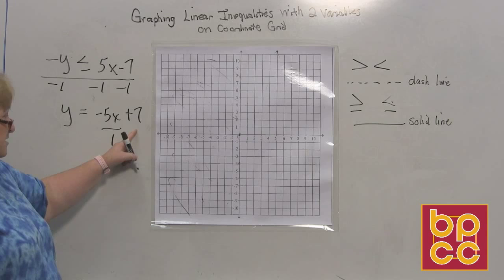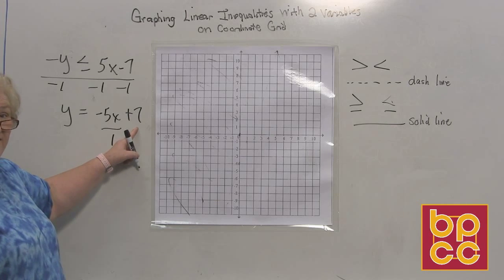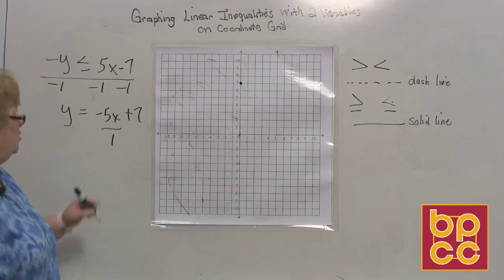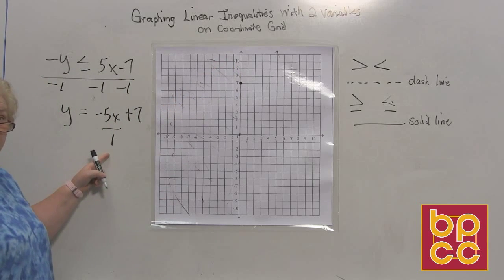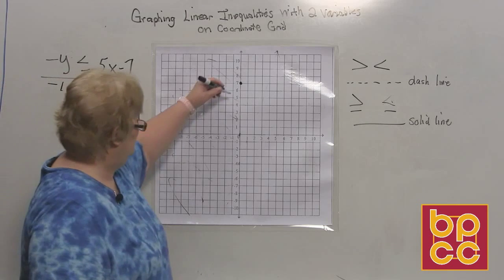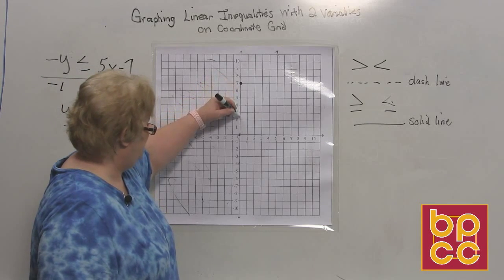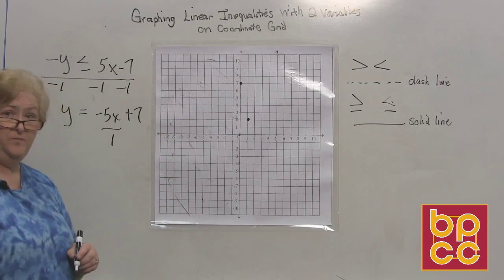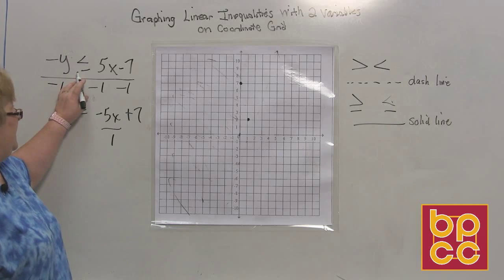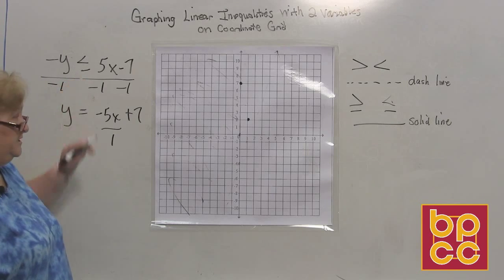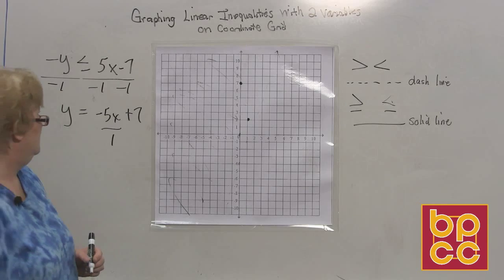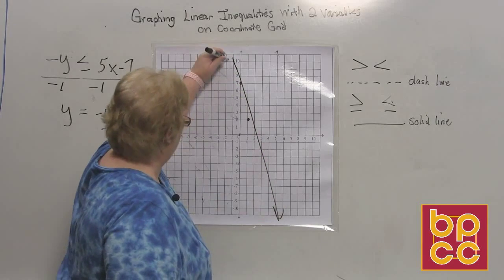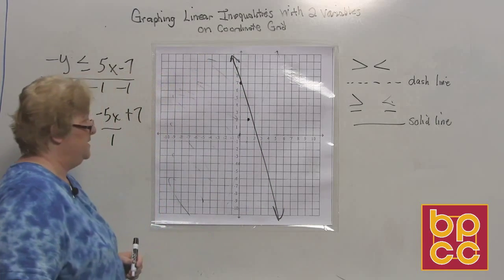Let's go up the y to 7, which is right here. Then we want to go down 5 and to the right 1: 1, 2, 3, 4, 5, and to the right 1. We have less than or equal to, so it needs to be a solid line this time.